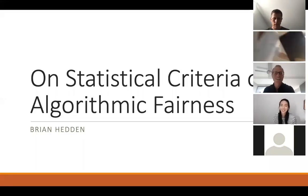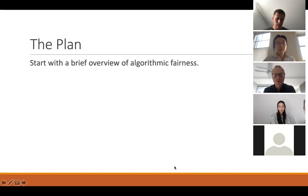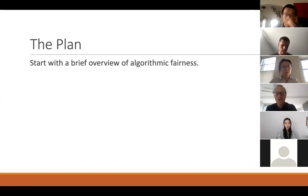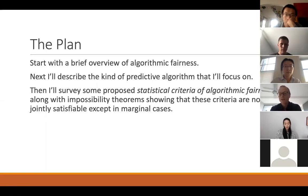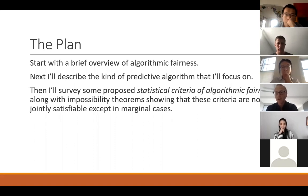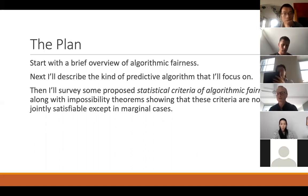I'm going to be talking about statistical criteria of algorithmic fairness. The plan is to start off with a brief overview of some issues in algorithmic fairness, just a brief taster for those unfamiliar with this area. Next, I'll describe the kind of predictive algorithm I'm focusing on, just to regiment discussion a little bit. Then I'll survey some proposed statistical criteria of algorithmic fairness, along with some impossibility theorems showing these criteria aren't jointly satisfiable, except in marginal cases like where prediction is perfect or where base rates of the relevant property are equal across groups.